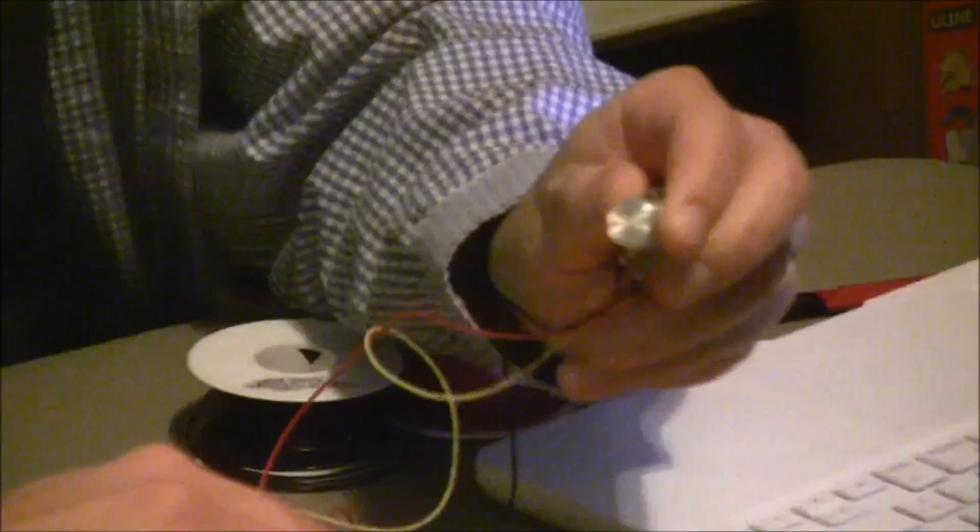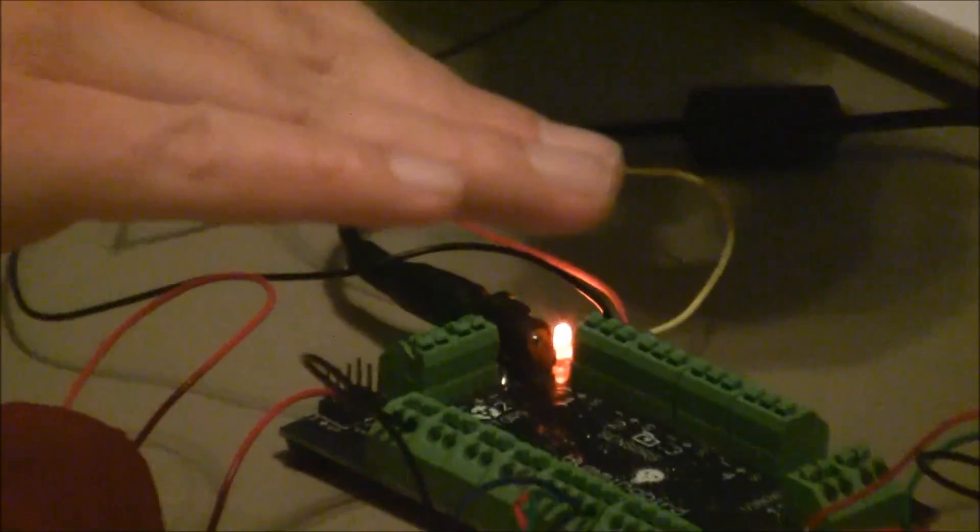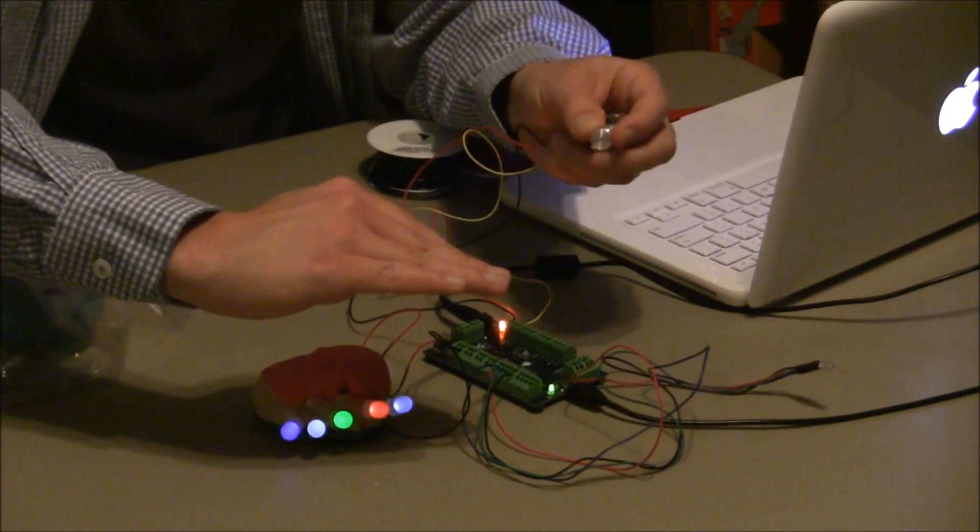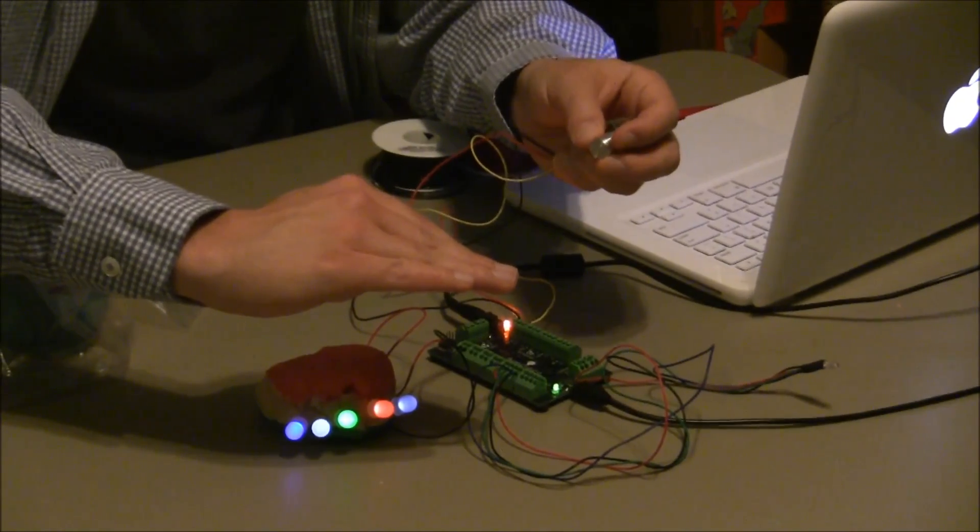And I actually have this hooked up to a knob. So the knob sensor is hooked up to port 1. And as I turn the knob, I can make them brighter or dim them. So I've turned this knob into a dimmer switch.